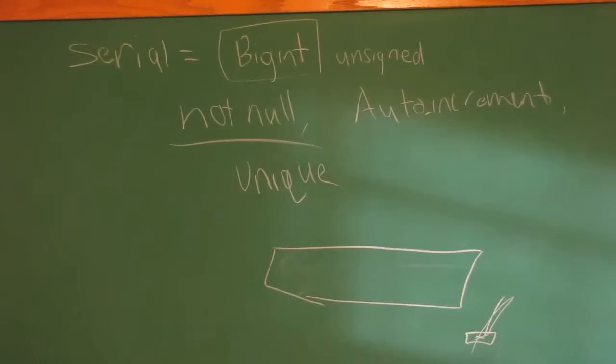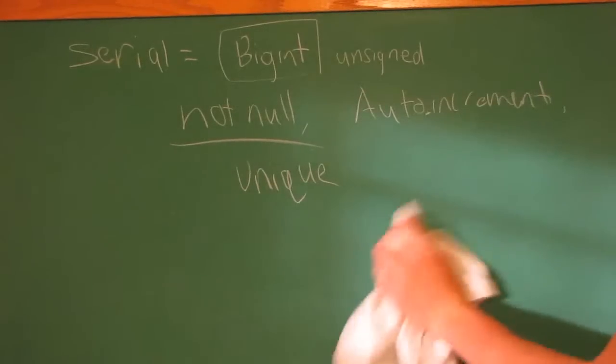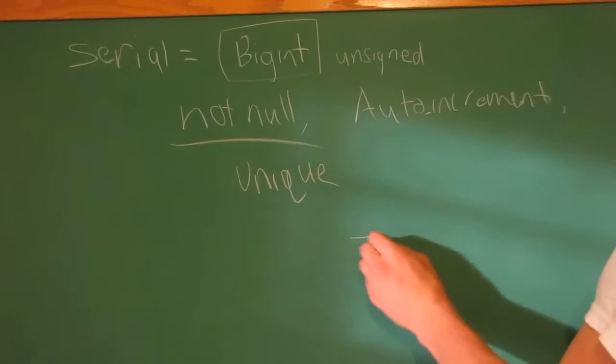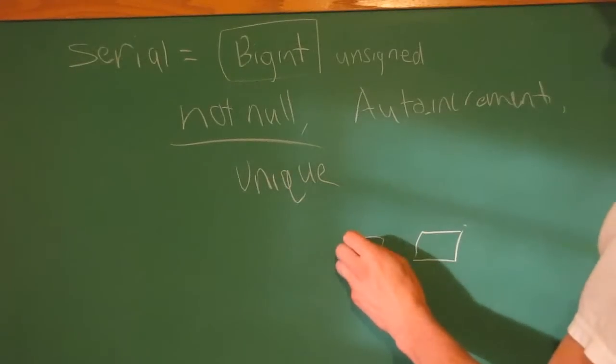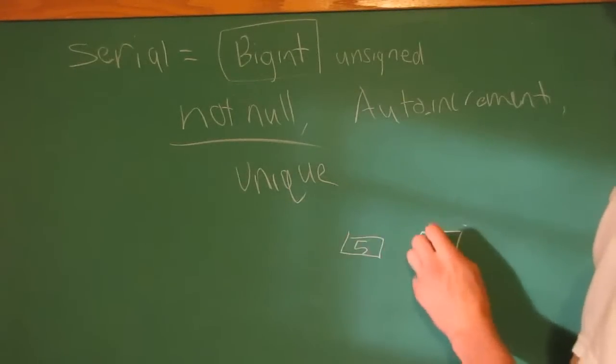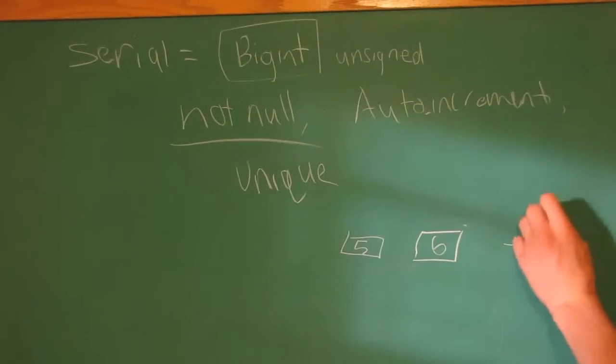In an auto increment, that means it will automatically go up by one each entry. So if one person enters, and then another person enters, this one will be, let's say, 5, and then this one will be 6. And then when the next person comes, it will be 7, and so forth. It will keep doing that by itself.